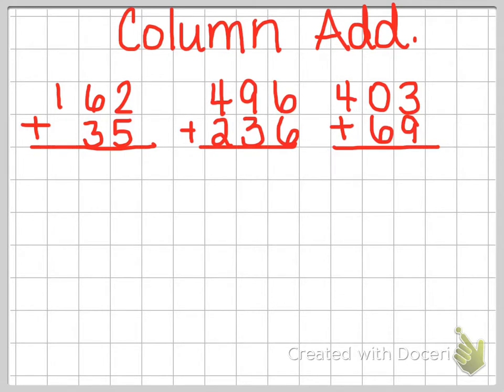So we would start right here in the ones column, and then we will work our way to the left. So we add 2 and 5, and we get 7. We add 6 plus 3, we get 9. And we add 1 to nothing, and we get 1. So the first problem, our answer would be 197.